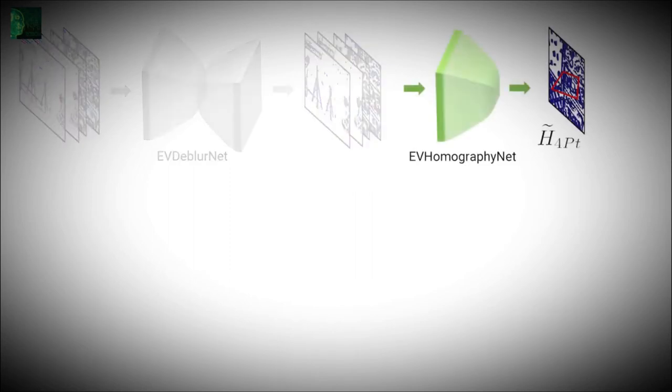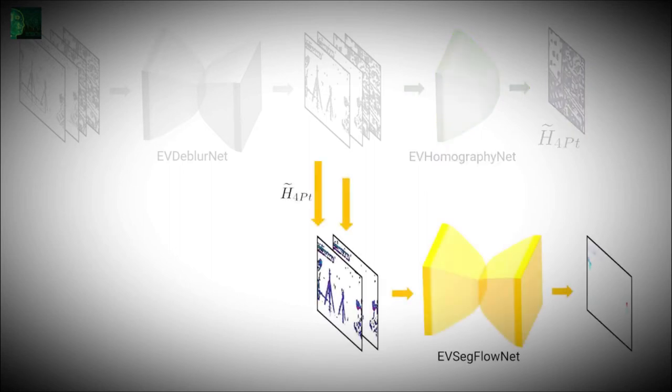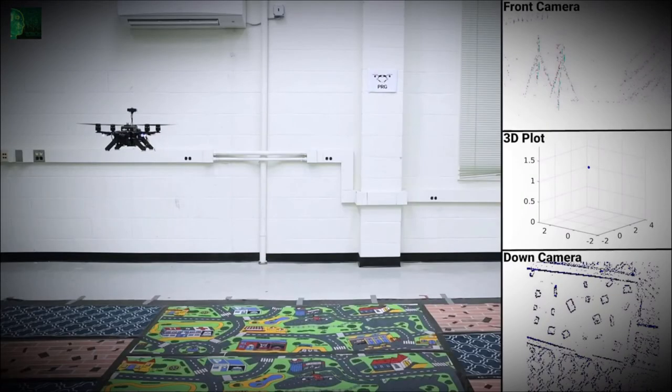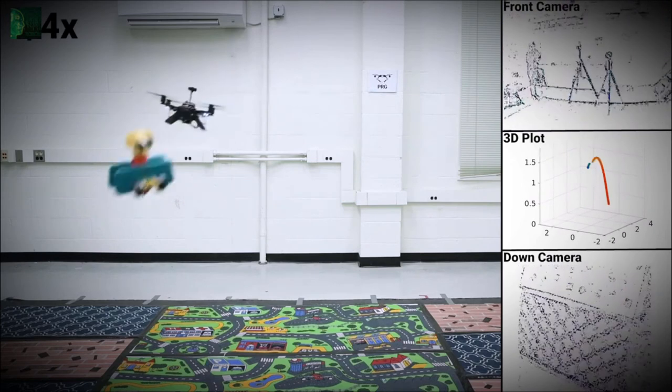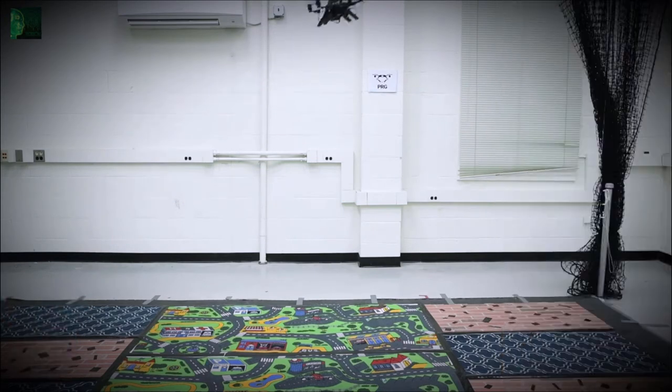Now, assuming that the down-facing camera is looking at a near-planar surface, we estimate the odometry using a combination of the sonar and the EV homography net. Later, this odometry is used to warp the front-facing event frames to perform motion compensation such that the dynamic obstacles stand out which is finally fed into the EV seg flow net to obtain segmentation flow. This information is then fed into our control policy to find a safe direction or a trajectory to avoid the dynamic obstacles.